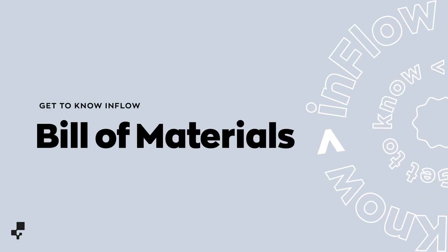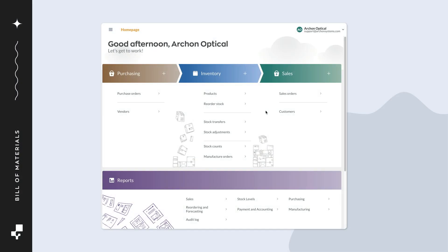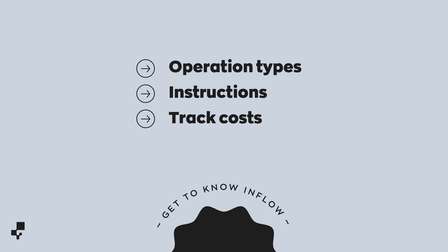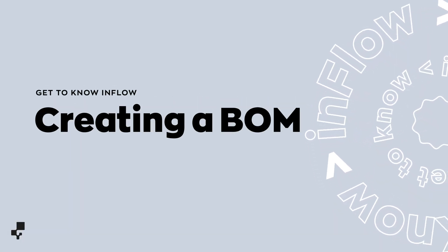Hi, in this video we'll go over how to create a bill of materials for manufacturing. A bill of materials is a list of components and raw materials used to manufacture a product. You can also add operation types, instructions, and track your costs. Bill of materials can help when it's time to assemble the product using manufacture orders. We'll take a look at that feature in depth in a future video. Let's get started.